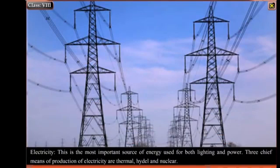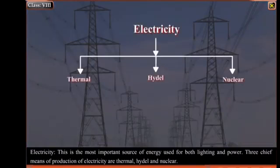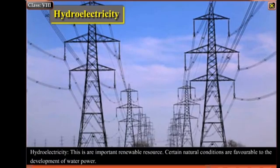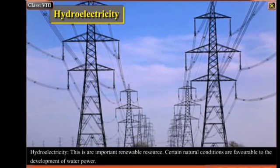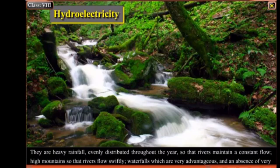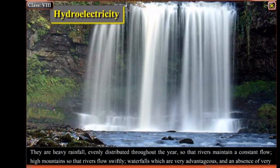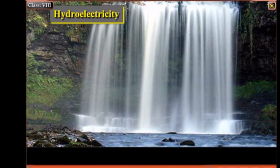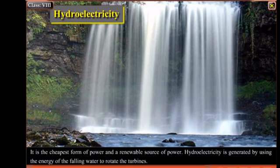Electricity is the most important source of energy used for both lighting and power. The three chief means of production of electricity are thermal, hydel, and nuclear. Hydroelectricity is an important renewable resource. Certain natural conditions are favourable to the development of water power: heavy rainfall evenly distributed throughout the year so that rivers maintain a constant flow, high mountains so that rivers flow swiftly, waterfalls which are very advantageous, and an absence of very cold winters so that rivers do not freeze. It is the cheapest and a renewable source of power.